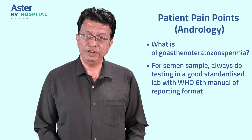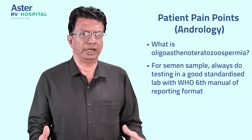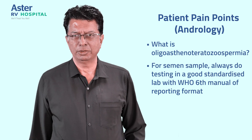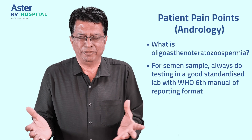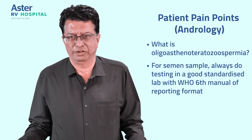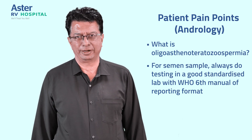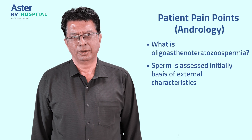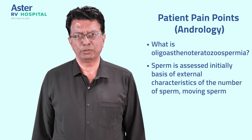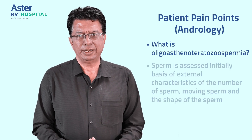We measure the number of moving sperm you have and the shape of the sperm, because roughly it is like looking at an individual and saying he looks handsome, he looks energetic and vivacious — so he should be intelligent, right? You make an assessment on the basis of external characteristics. Similarly, sperm is assessed initially on the basis of external characteristics: the number of sperm, the moving sperm, and the shape.